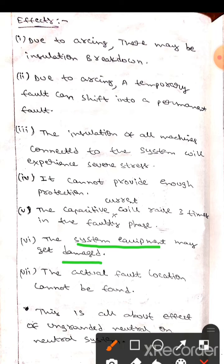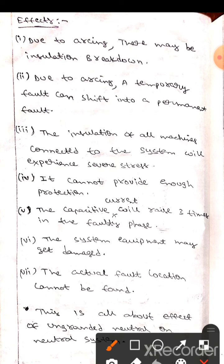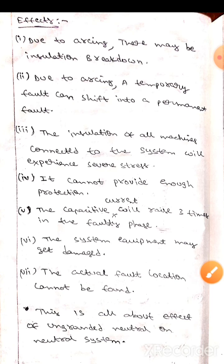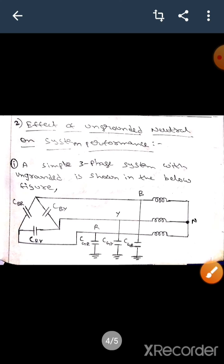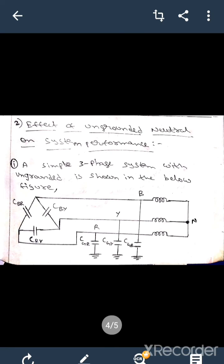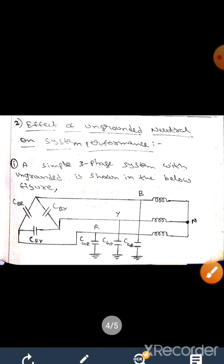Another effect is that we cannot find the actual fault location. This covers all the effects of an ungrounded neutral system protection. Thank you.